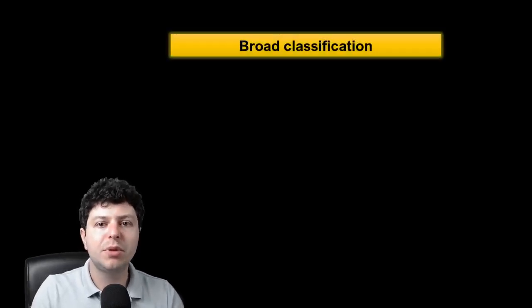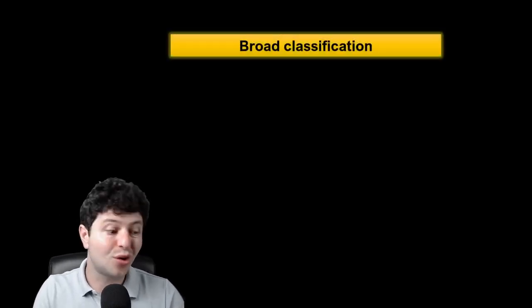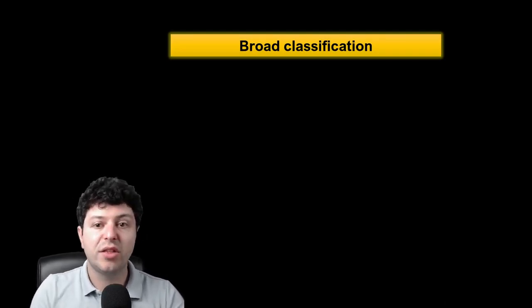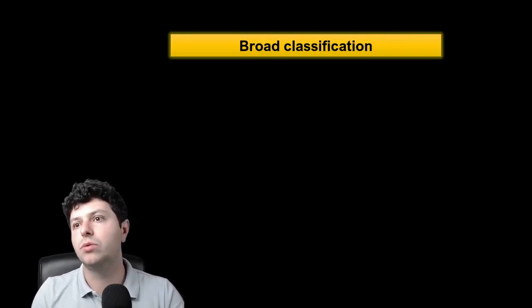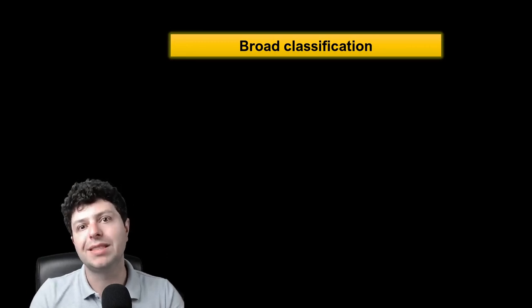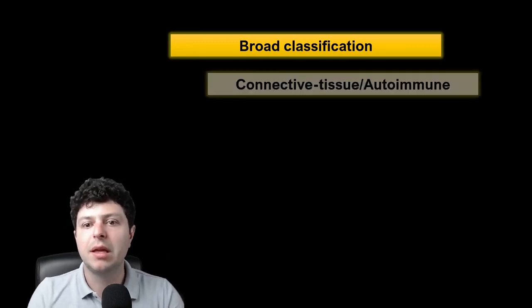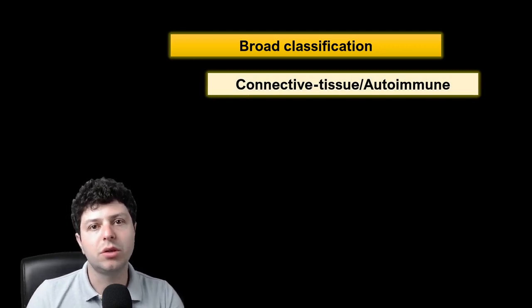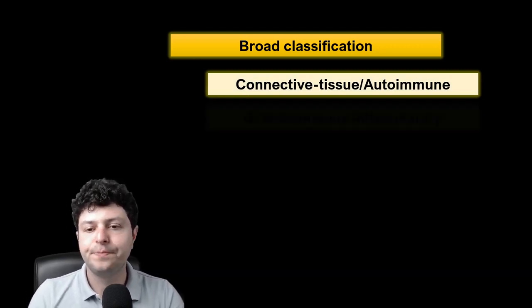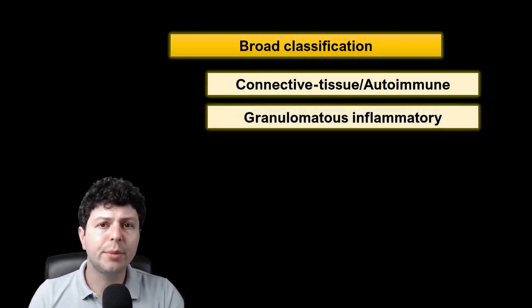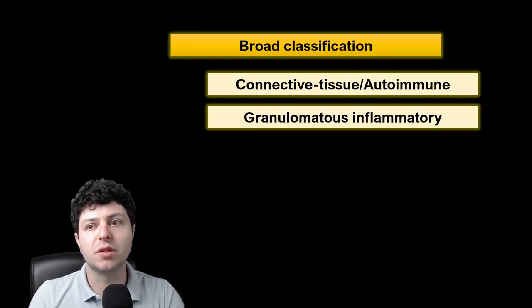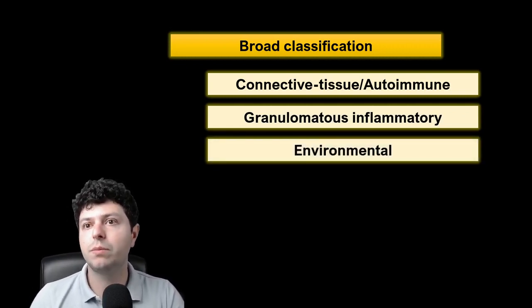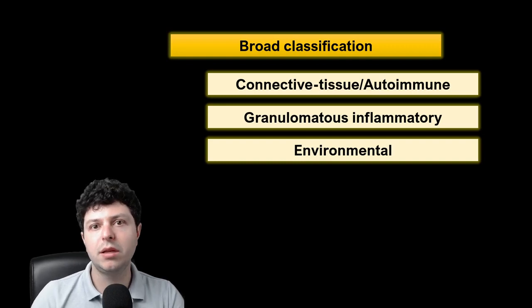Now let's begin with a broad classification. You might want to classify the ILD your patient is suffering from into something related to a connective tissue or autoimmune condition — a CTD. It might be a granulomatous inflammatory condition such as sarcoidosis.